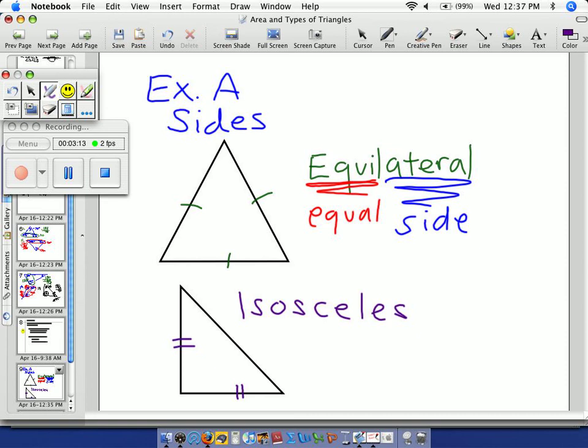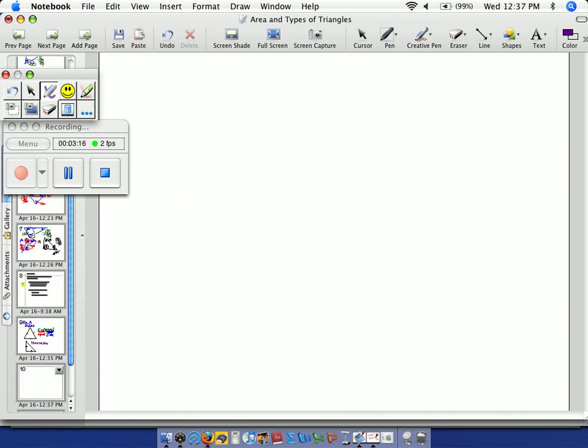All right, and our third triangle. I'm running out of space already. I'll have to draw it. All right. This is known as a scalene triangle. Okay. Just pretend all my dots connect there. I can't seem to make it right now.